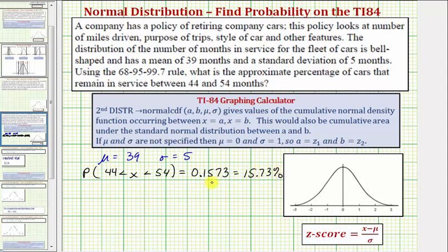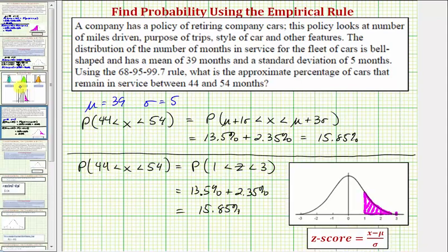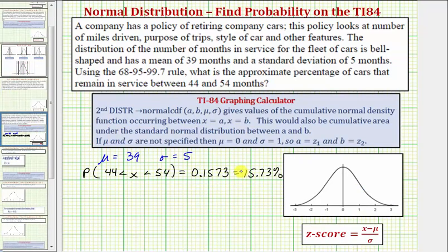Which means approximately 15.73 percent of the cars remain in service between 44 and 54 months. Now I do want to mention that when we did this by hand using the empirical rule, our percent was a little bit different because the calculator is giving us a little bit more of an accurate percentage. When we did this by hand using the empirical rule, we came up with 15.85 percent.